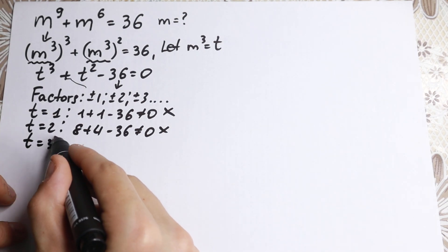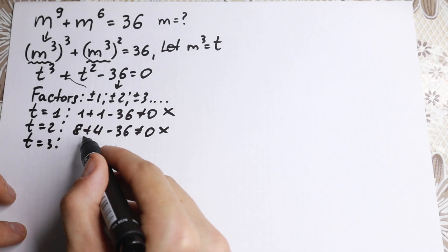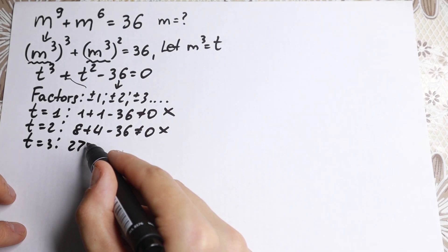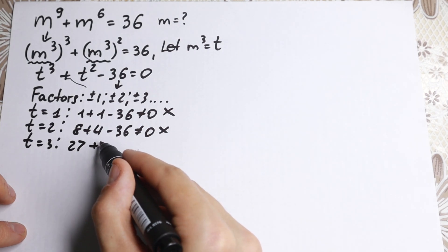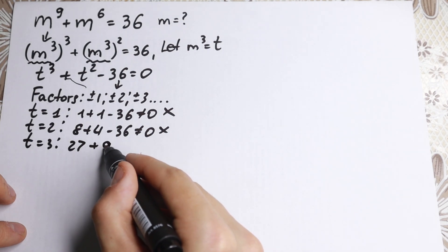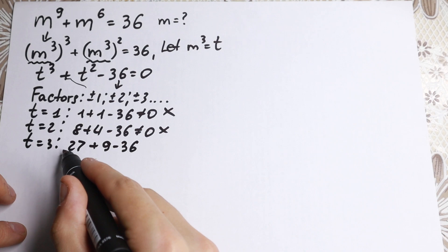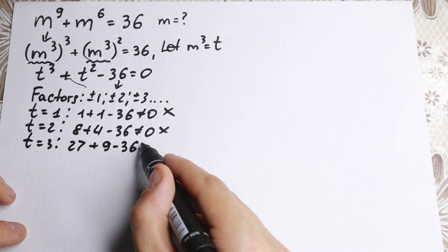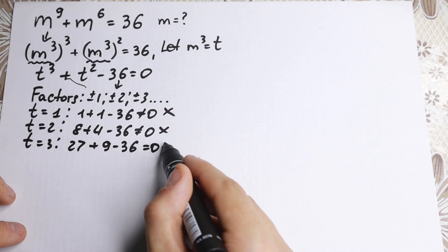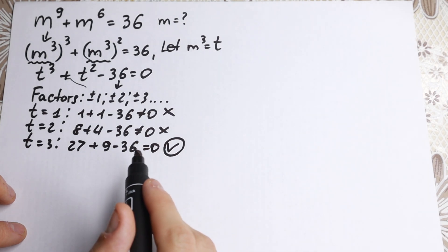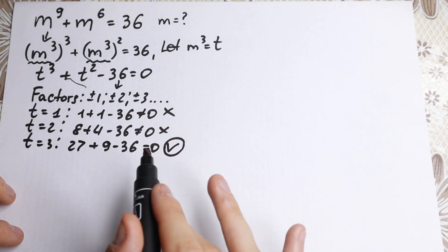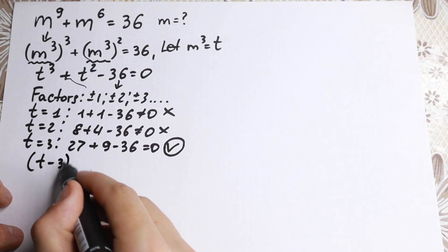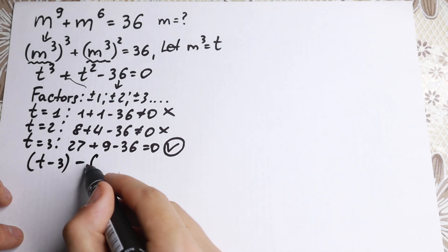Let's try t = 3. We have t-cubed = 27, plus t-squared = 9, minus 36. So 27 + 9 − 36 = 0. By this inspection, we find one factor: (t − 3) is our factor.